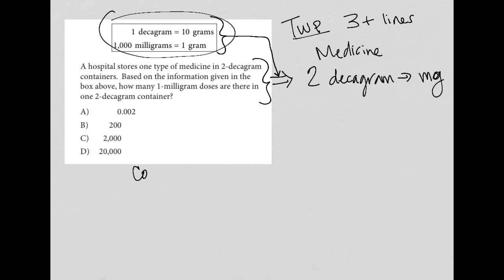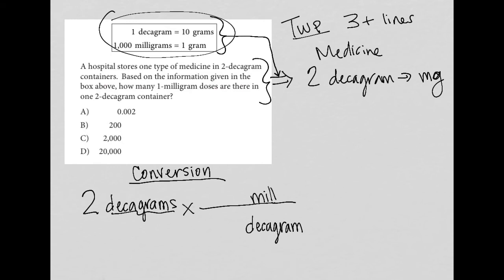So this is a conversion question. There are not many conversion questions on the SAT, but it is useful to understand how to do these. First and foremost, you always start with the provided information and make sure to write down the unit. So I'm going to write down two decagrams. Then you're going to multiply by what's called a conversion factor. That conversion factor will always have the same unit that you started off with in the denominator and the unit that you want to end up with, milligram, in the numerator. That's always how things will work. So we're going to use the top information to figure out how to get there.